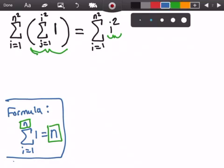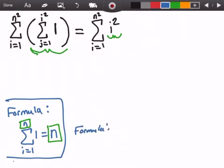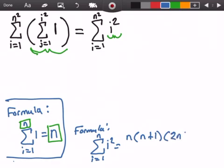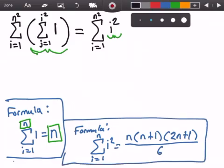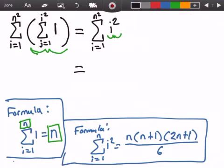All right. So next up, we need to figure out what this summation equals. Well, there's another formula we can use. And I'll put that down here. And this formula runs from i equals 1 to n of i squared. And it's equal to n times n plus 1 times 2n plus 1, all of that divided by 6.